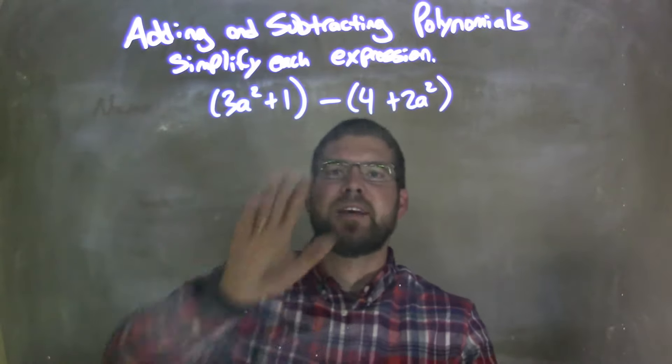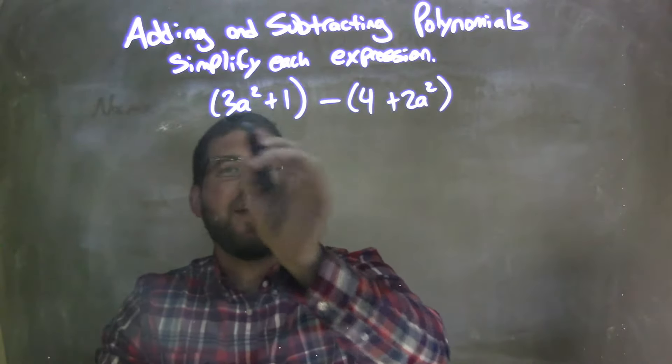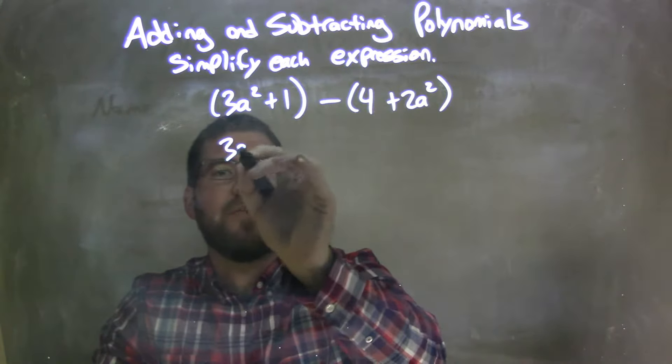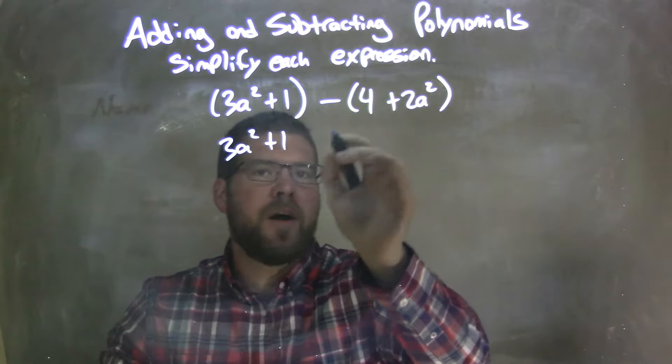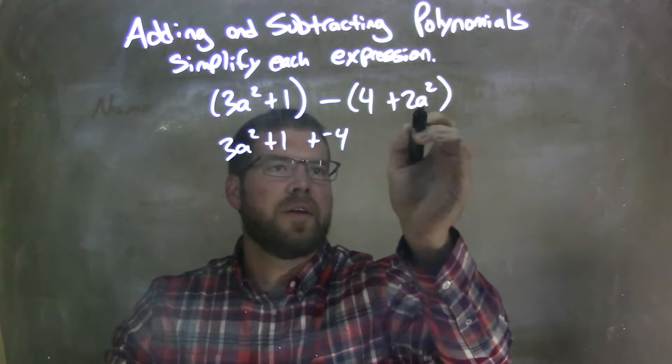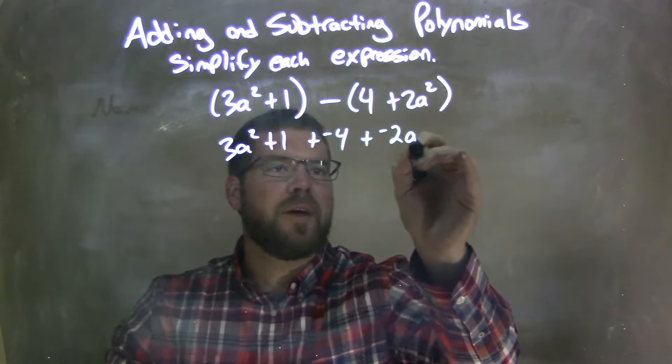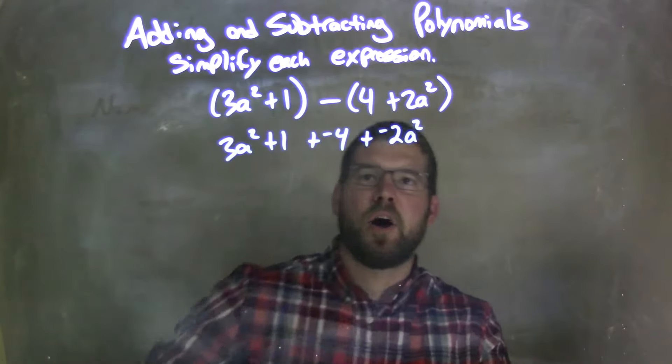What I'm going to do first is distribute that subtraction sign across. There's nothing I can do to simplify this parentheses, so I'm going to rewrite this to be 3a squared plus 1, and I'm going to distribute that minus sign across, so we have negative 4, and then plus a negative 2a squared. So we distributed that minus sign across.